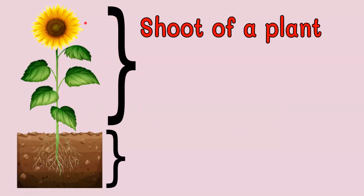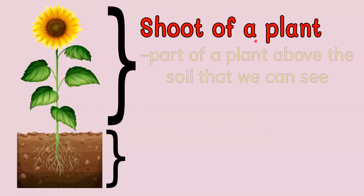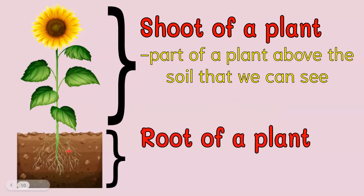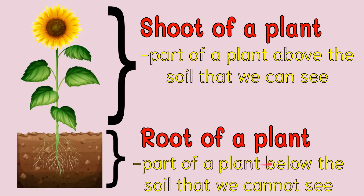It is divided into two. For the sunflower, this part is the shoot of a plant. What is a shoot of a plant? It's a part of a plant above the soil that we can see. This is what we call the shoot of a plant. This one is the root of a plant — a part of a plant below the soil that we cannot see. This part is the shoot of the plant while this one is the root of a plant.